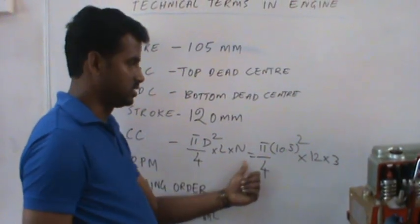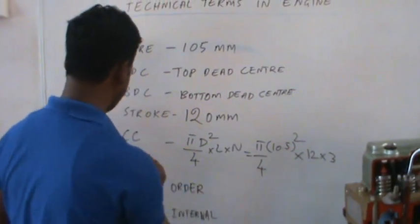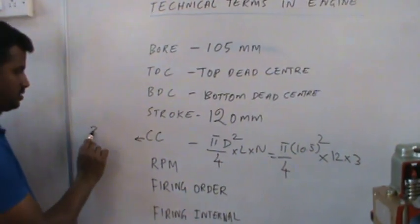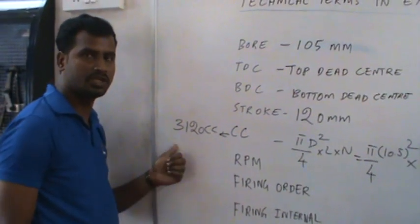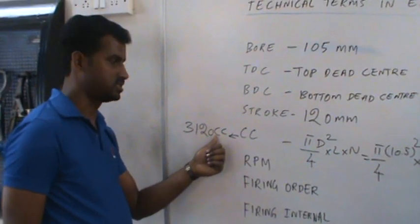you will get the CC. The CC of this engine is 3,120 CC, cubic centimeters. We mention this as CC.